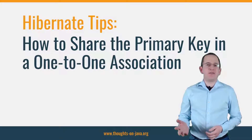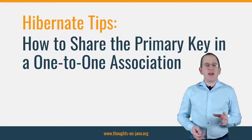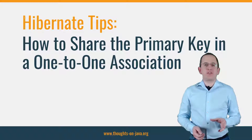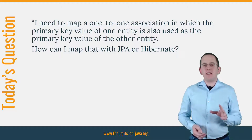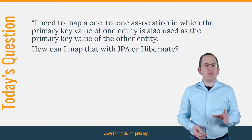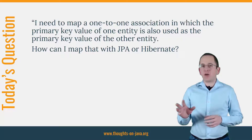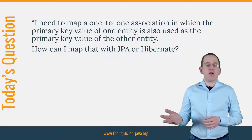Hi, I'm Torben Janssen from thoughts-on-java.org with a new Hibernate Tip. I got the following question on my blog, so let's talk about it today. I need to map a 1-to-1 association in which the primary key value of one entity is also used as the primary key value of the other entity. How can I map that with JPA or Hibernate?